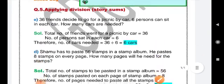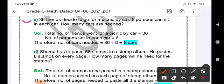So today we are going to do part E of our question 5. The part E question we have to read very carefully. 36 friends decide to go for a picnic by car. 6 persons can sit in each car. How many cars are needed?